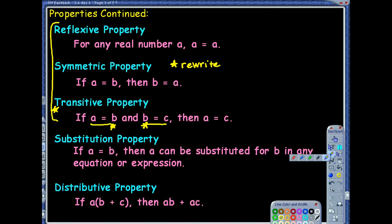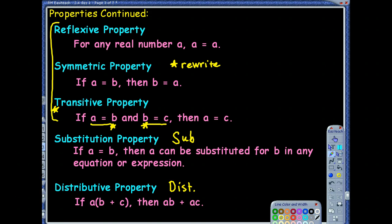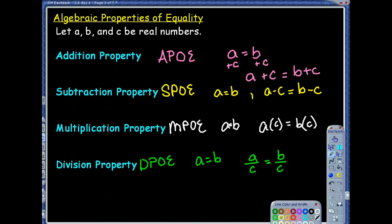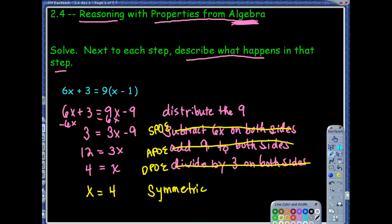Substitution property — if you know some things are equal, you can substitute one with the other. We've done that already a lot this year. And then the distributive property — we just talked about that. For abbreviations: distributive property, I like to use DIST. Substitution, I'm okay with 'sub.' Be careful — subtraction has the same three first letters, so when you're using subtraction property of equality, use SPO. So instead of writing 'distribute the 9,' you could just say DIST.